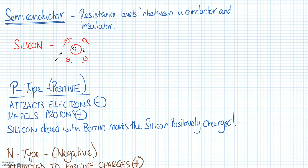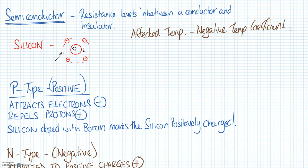However, semiconductors are affected by temperature. When affected by temperature, they have a negative temperature coefficient. What that means is that the colder the silicon gets, the less its resistance is. In other words, it becomes more conductive.